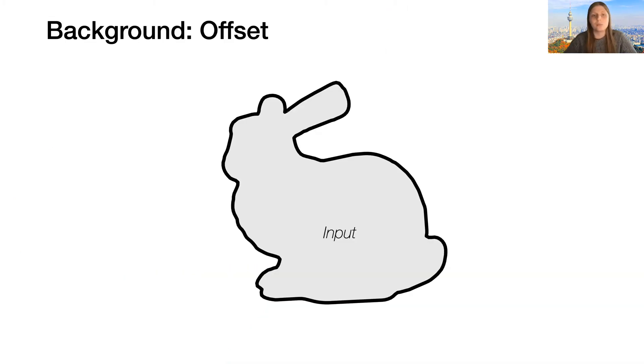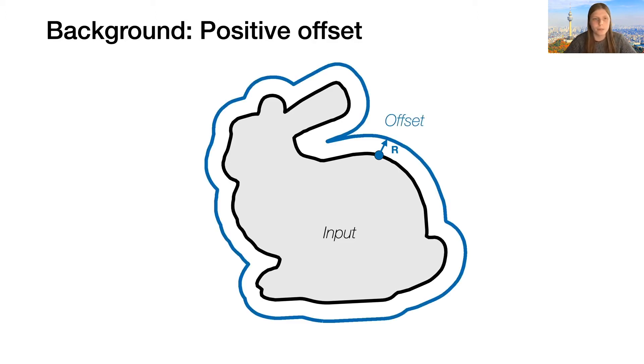Let's begin by considering a simpler operation on a shape. Imagine I have an input solid shape like this bunny, and I move every point in its surface by a constant amount r in the normal direction to generate a new shape, which we can call the offset shape. We call this a positive offset because the shape grows outward.